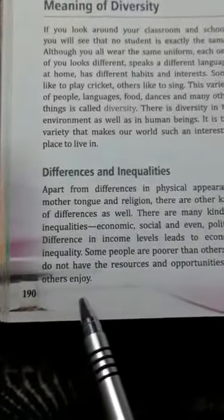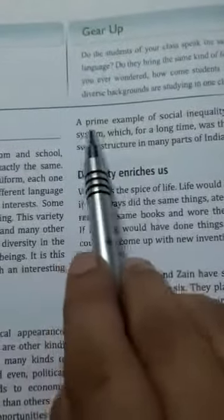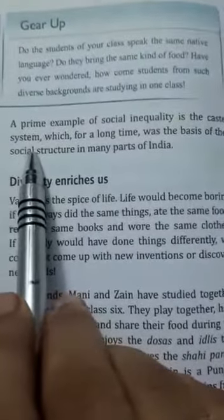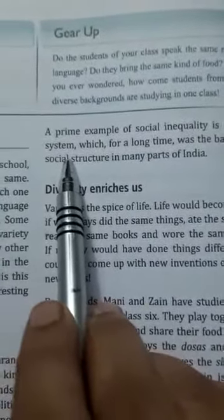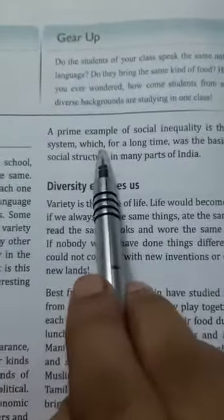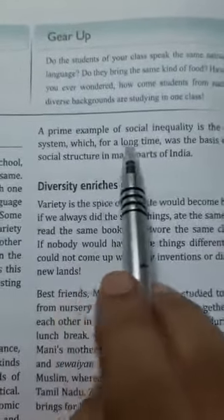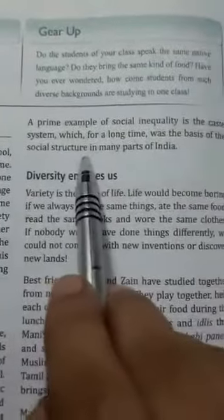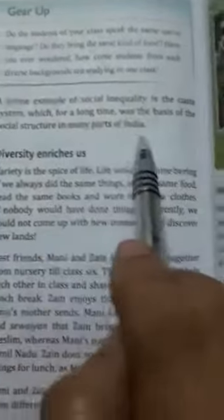Some people are very poor and do not have resources — unpe resources bhi nahi hoti hai, unpe koi opportunities bhi nahi hoti hai jo doosri cheeze vo enjoy kar sake. A prime example of social inequality is the caste system — caste system ek prime example le sakte hain inequality ka.